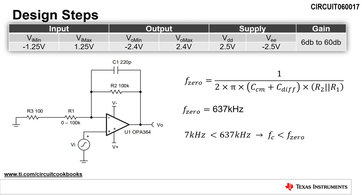created by the resistive feedback network and the total input capacitance of the op amp. F0 is equal to 1 divided by 2 times pi times CCM plus Cdiff times the parallel combination of R2 and R1. CCM is the common mode input capacitance of the op amp, and Cdiff is the differential input capacitance of the op amp. F0 is calculated to be 637 kilohertz. Since the circuit bandwidth is less than the zero frequency, the circuit is stable.